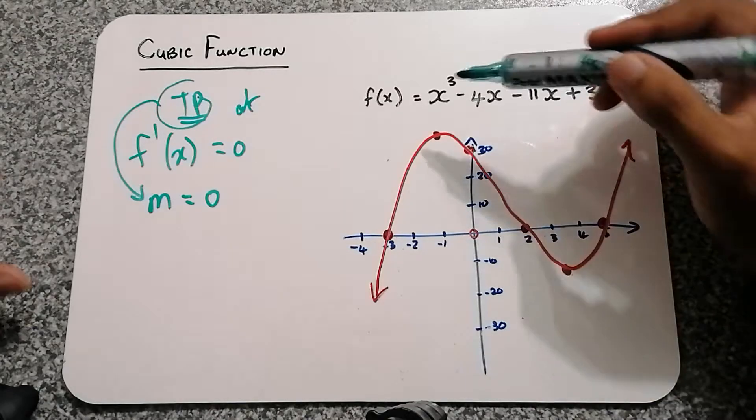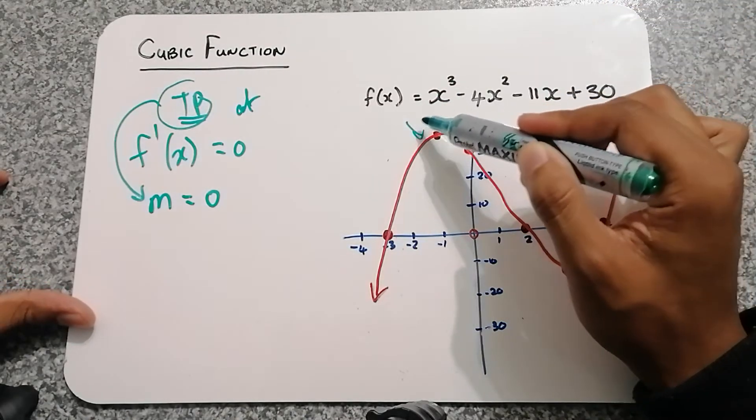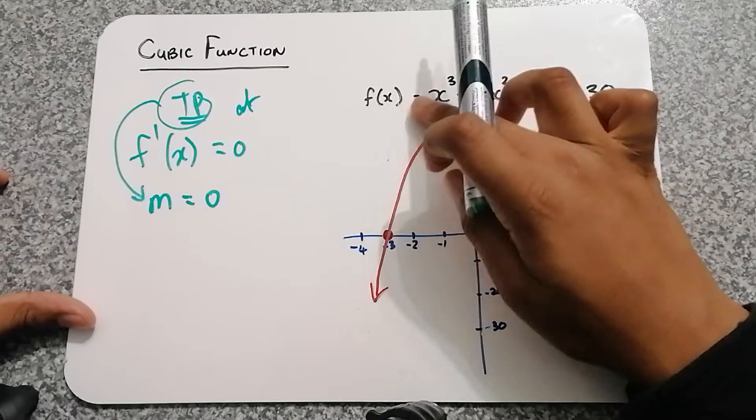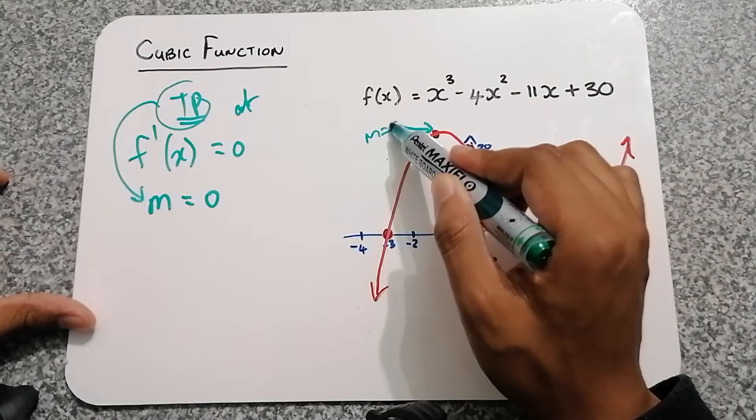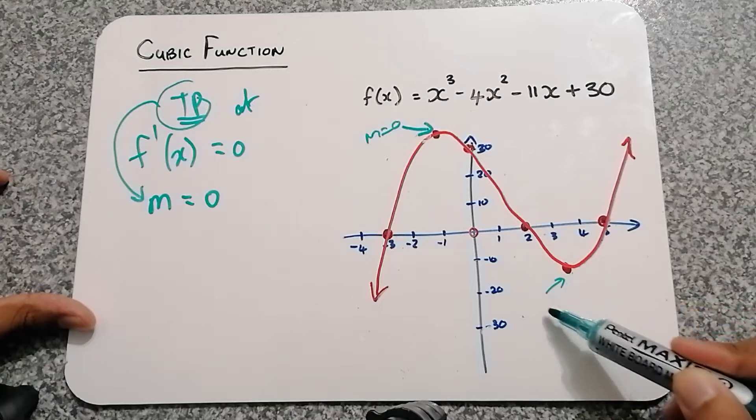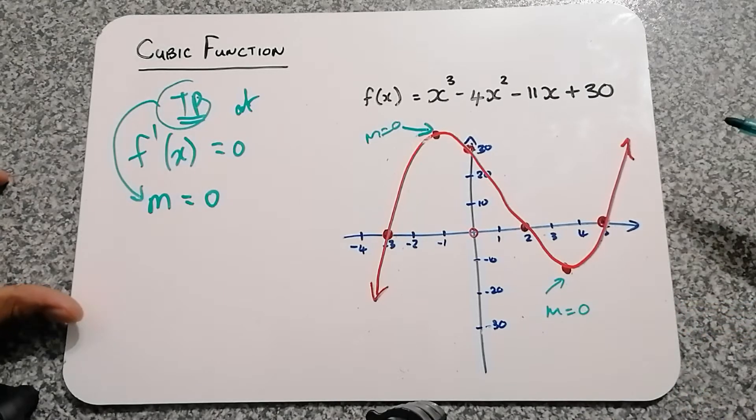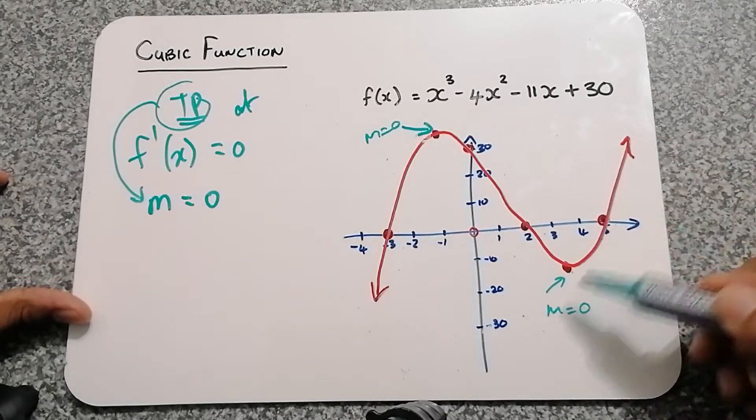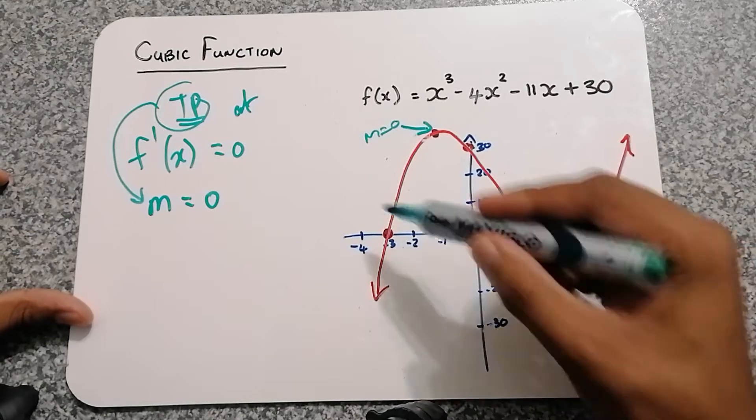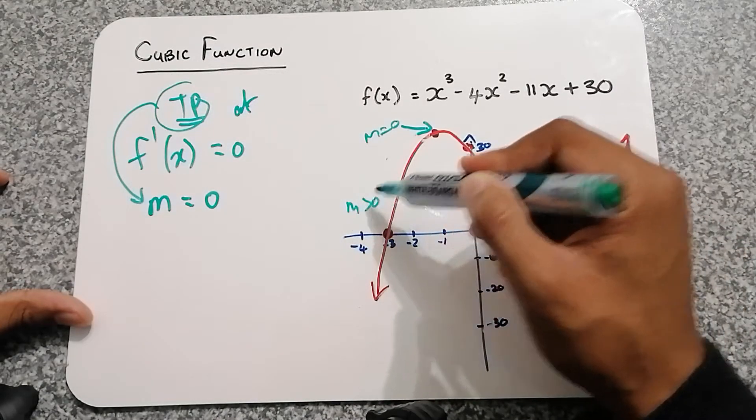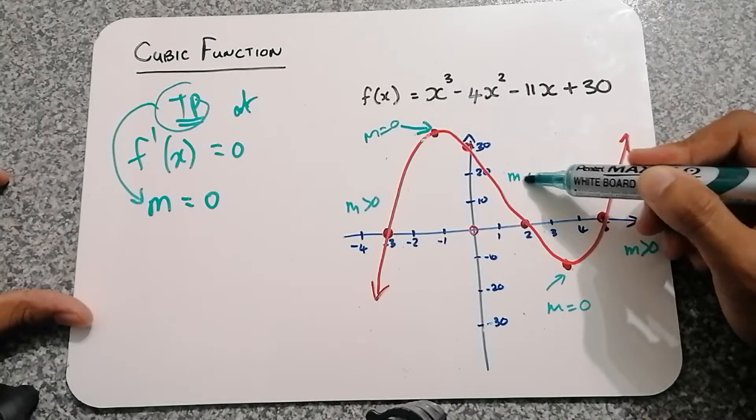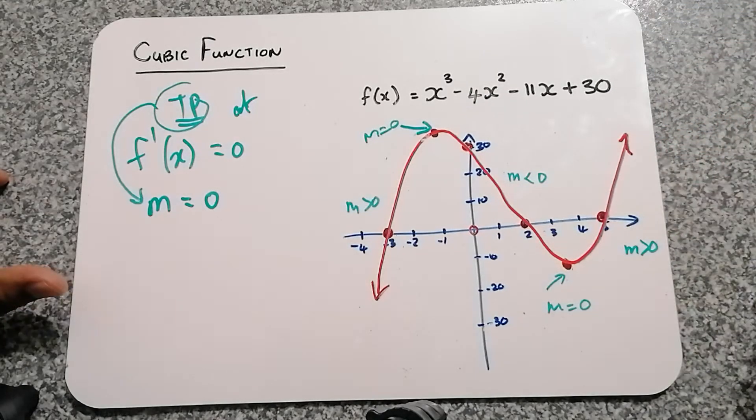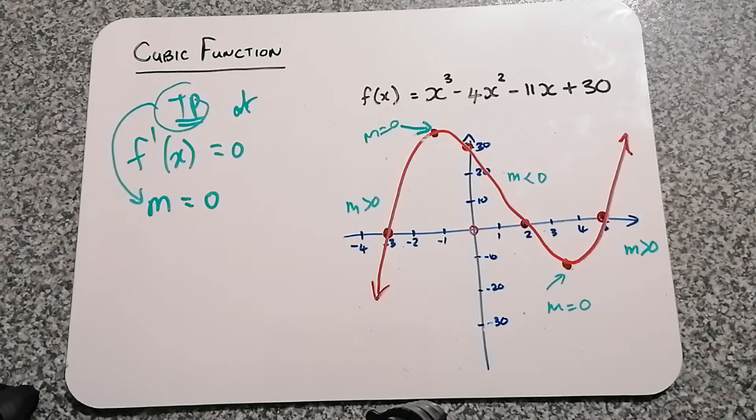So right here at the turning point, the gradient is zero. And over here as well, the gradient is also zero. I guess we can say for this section the gradient is greater than zero, as well as this section greater than zero. And then this middle section, this is where the gradient is less than zero. So that's number one.